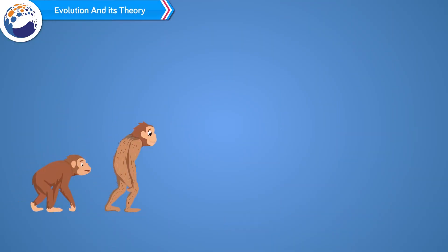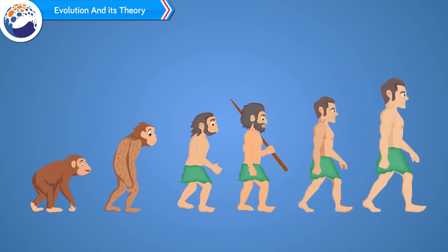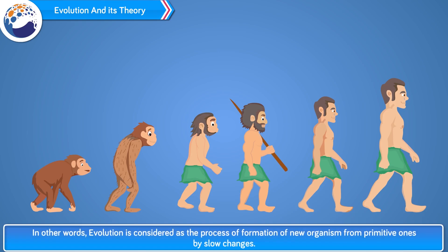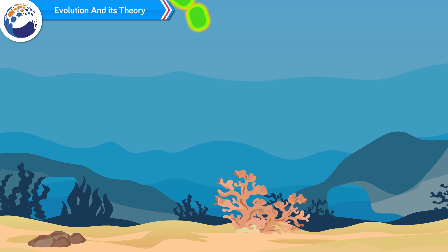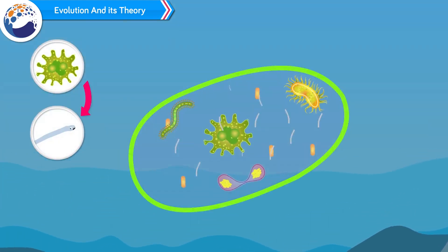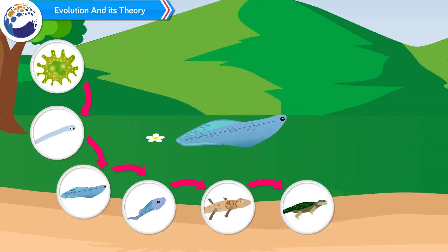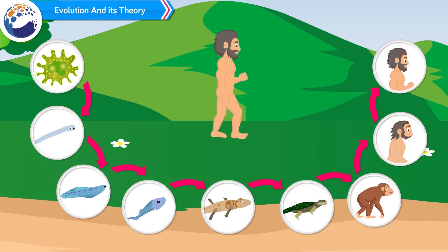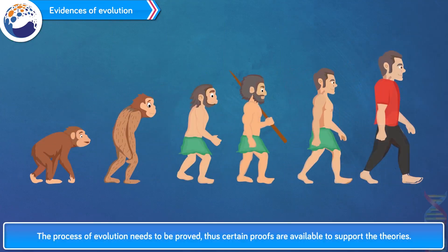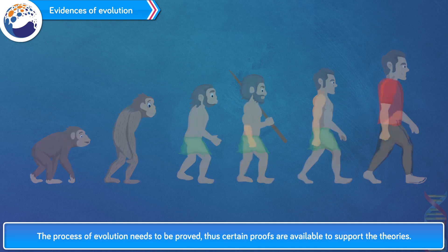Evolution and its theory: Evolution is considered as the process of gradual change occurring in living organisms over a long duration. In other words, evolution is the process of formation of new organisms from primitive ones by slow changes. Theory of evolution suggests that living organisms originated in the ocean. Initially, unicellular organisms formed, which gradually evolved into multicellular and complex organisms. It took around 300 crore years for these changes to occur, and these changes were multidimensional, leading to the evolution of various kinds of living organisms. The process of evolution needs to be proved, and certain proofs are available to support the theories.